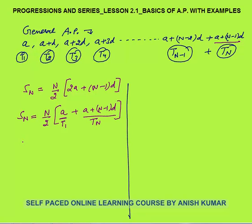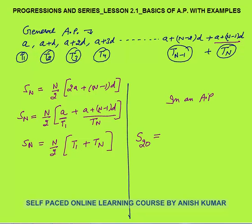So the sum can be represented as n by 2 times term number 1 plus term number n. It means that if you know the first term and the nth term, you can always calculate the sum of first n terms. For example, if you want to calculate the sum of first 20 terms, you can calculate this as 20 by 2 times term number 1 plus term number 20, that is the last term.